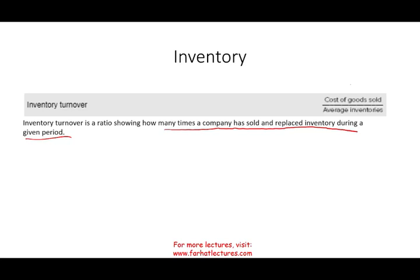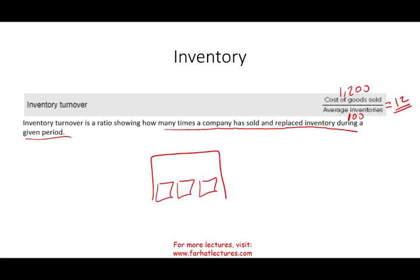Using simple numbers: cost of goods sold of $1,200 divided by average inventory of $100 equals 12. That means you turn over your inventory 12 times a year — in other words, every month. So the store is filled once a month, everything is sold on average by month-end, and then refilled again — 12 times in a year. You want this ratio to be as high as possible.